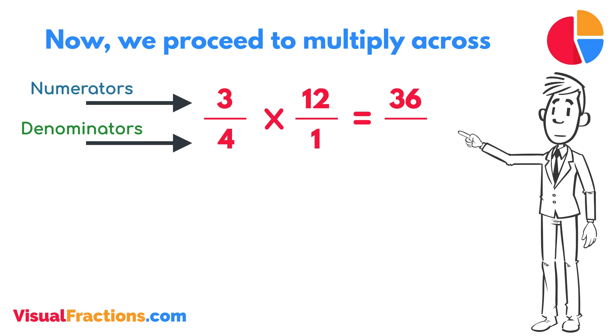Next, multiply the denominators: 1 times 4 equals 4. We now have a new fraction, 36 quarters.